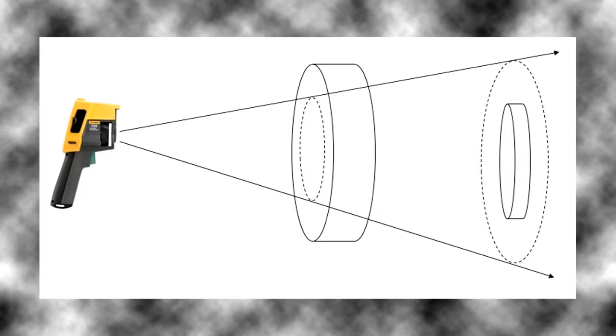In the second case, the target is smaller than the spot size, and any temperatures that are in that area will be averaged in with the temperature of the target.